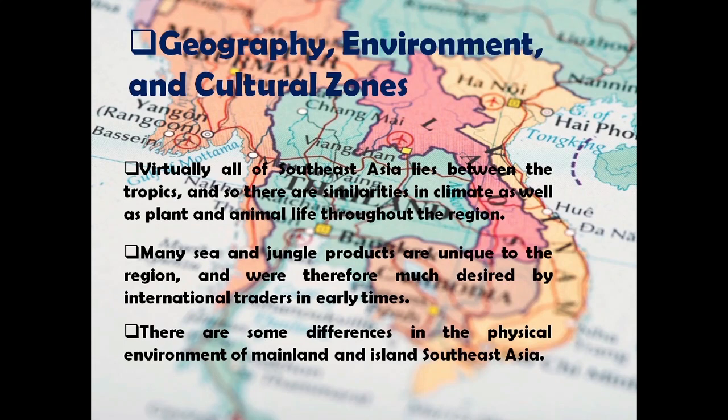Virtually all of Southeast Asia lies between the tropics, so there are similarities in climate as well as plant and animal life throughout the region. Mainly sea and jungle products are unique to the region and were therefore much desired by international traders in early times. There are some differences in the physical environment of mainland and island Southeast Asia.